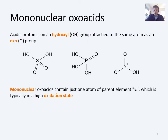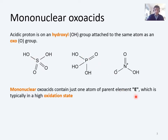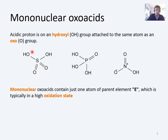Within that general category, there is a very specific one: a mononuclear oxoacid. Here you have an acidic proton on a hydroxyl OH group attached to the parent element — in this case sulfur or phosphorus. This parent element, referred to more generally as E, has at least one oxo group attached to it, because otherwise it wouldn't be an oxoacid. The mononuclear bit means there's just one parent element, so all of these would be examples of mononuclear oxoacids.